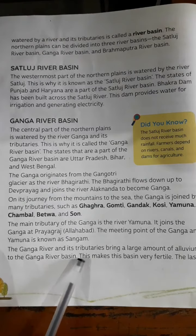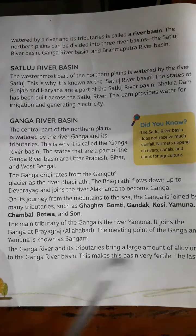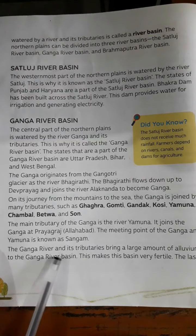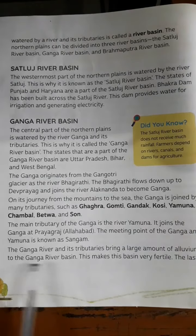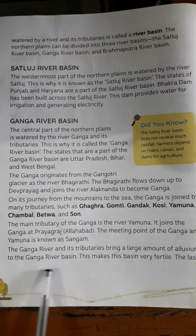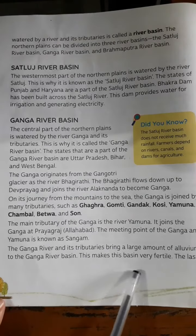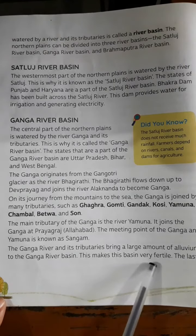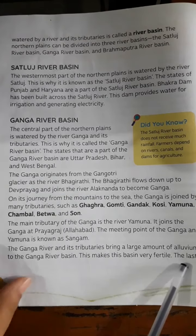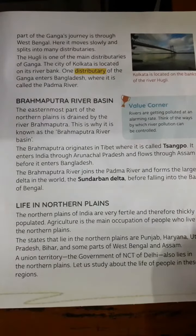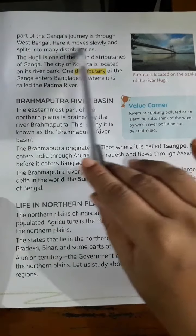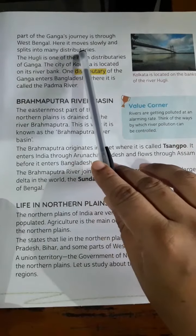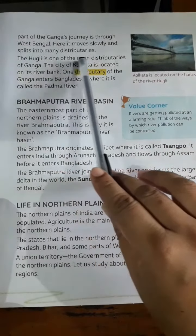The Ganga River and its tributaries bring a large amount of alluvium to the Ganga River Basin, making this basin very fertile. The last part of Ganga's journey is through West Bengal, where it moves slowly and splits into many distributaries.